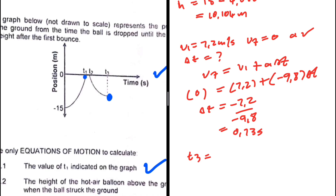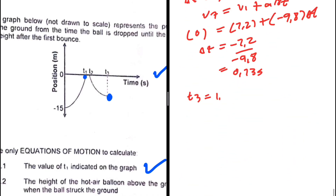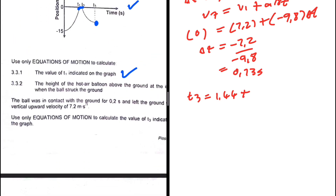Solving delta_t: 0 = 7.2 + (minus 9.8)·delta_t, so delta_t = minus 7.2 divided by minus 9.8 equals 0.73 seconds. T3 equals T1 plus the time in contact with the ground plus 0.73: T3 = 1.44 + 0.2 + 0.73 = 2.37 seconds.